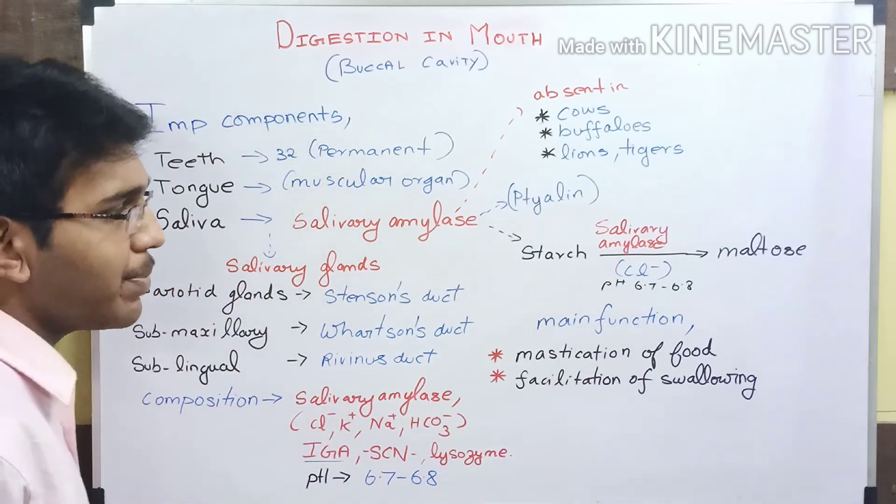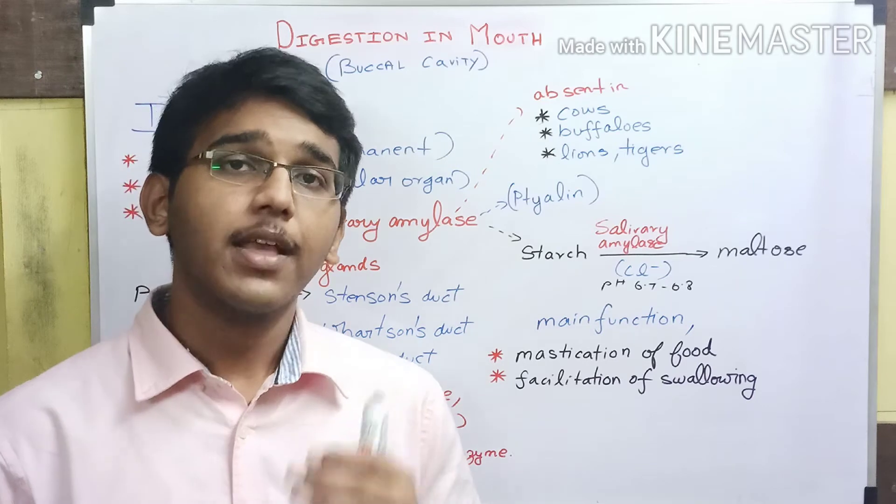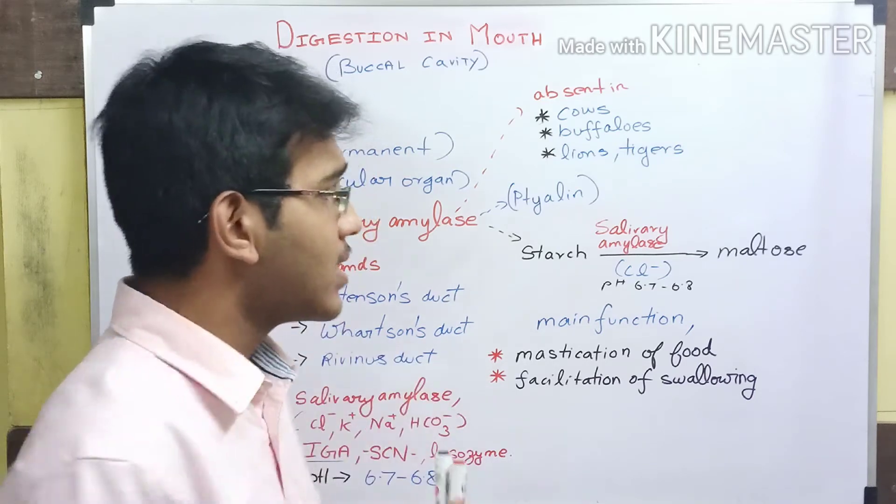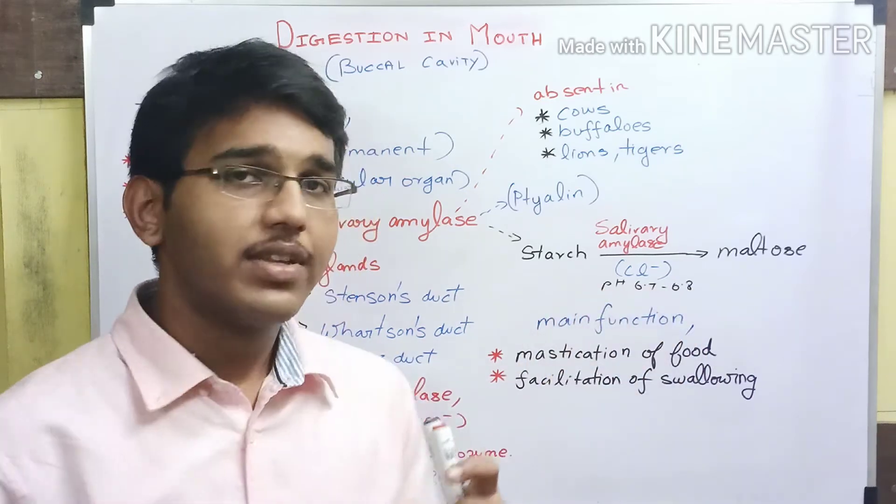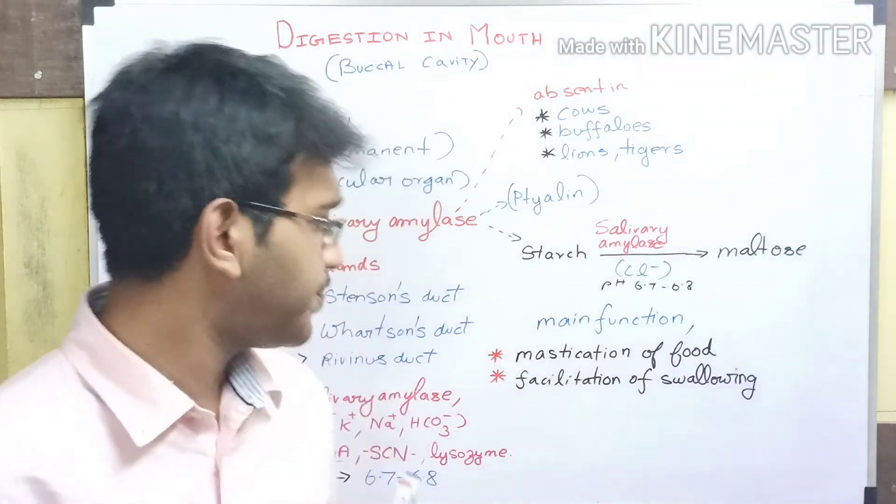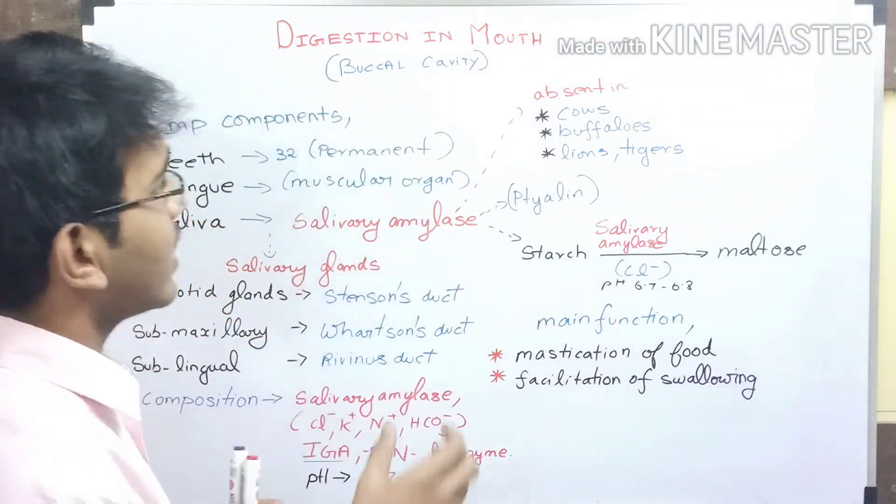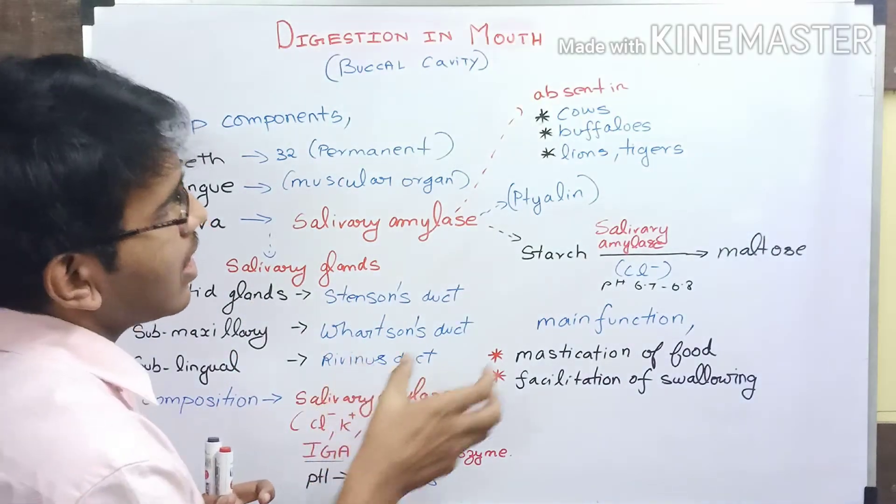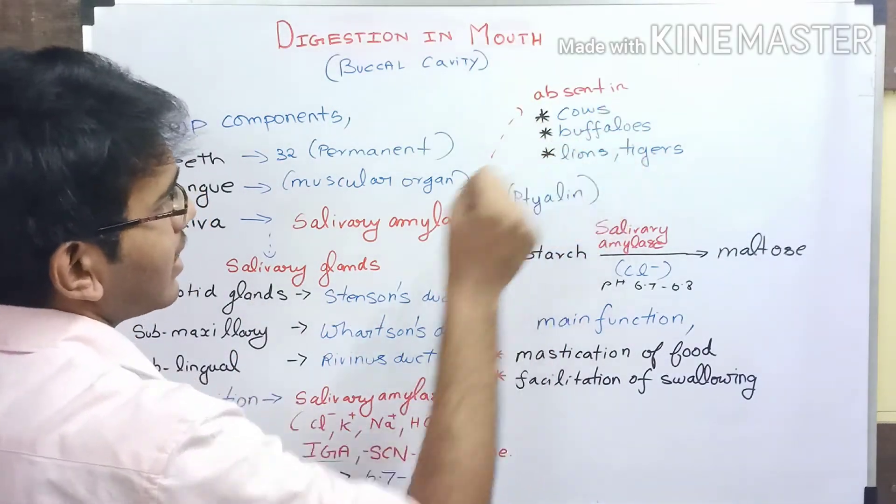The optimum pH at which salivary amylase becomes very active is 6.7 to 6.8, which is an acidic pH. Salivary amylase is absent in cows, buffalos, and lions.